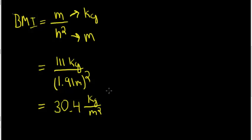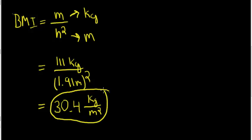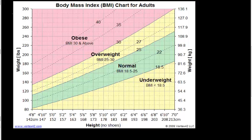So, 30.4 is Tim Tebow's body mass index. If we look at the body mass index chart, we see that Tim Tebow would be considered obese.